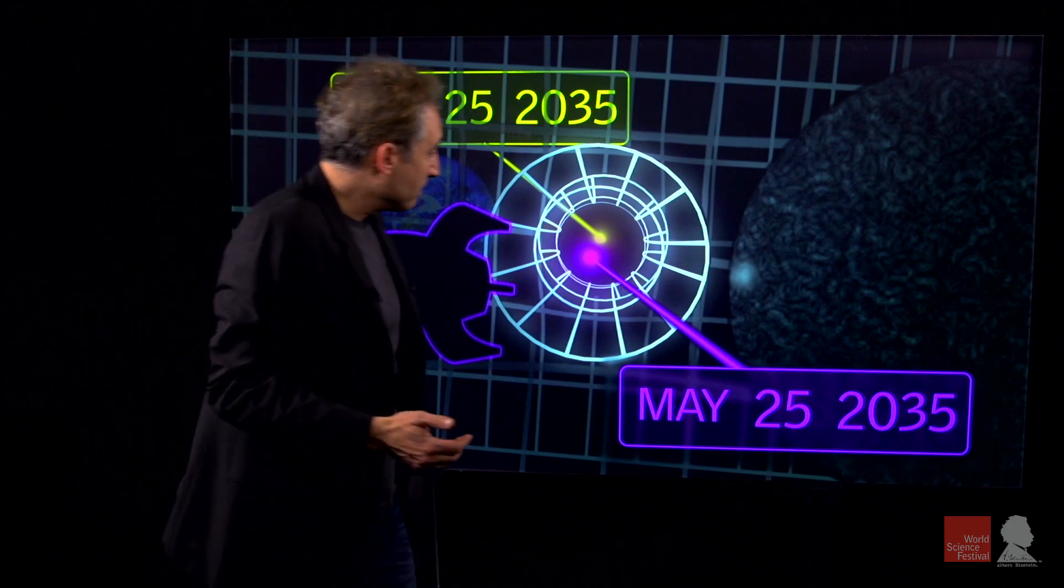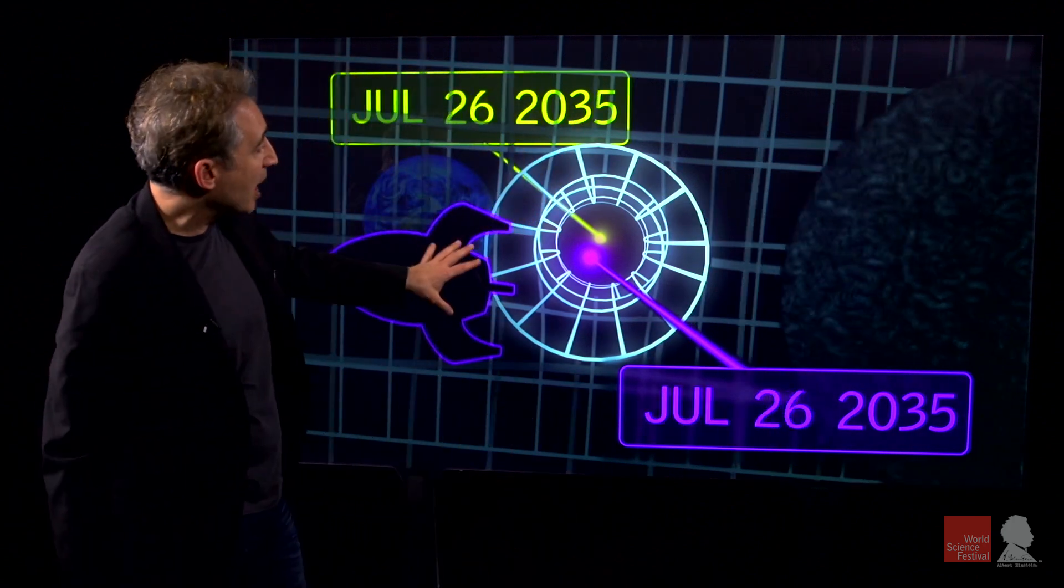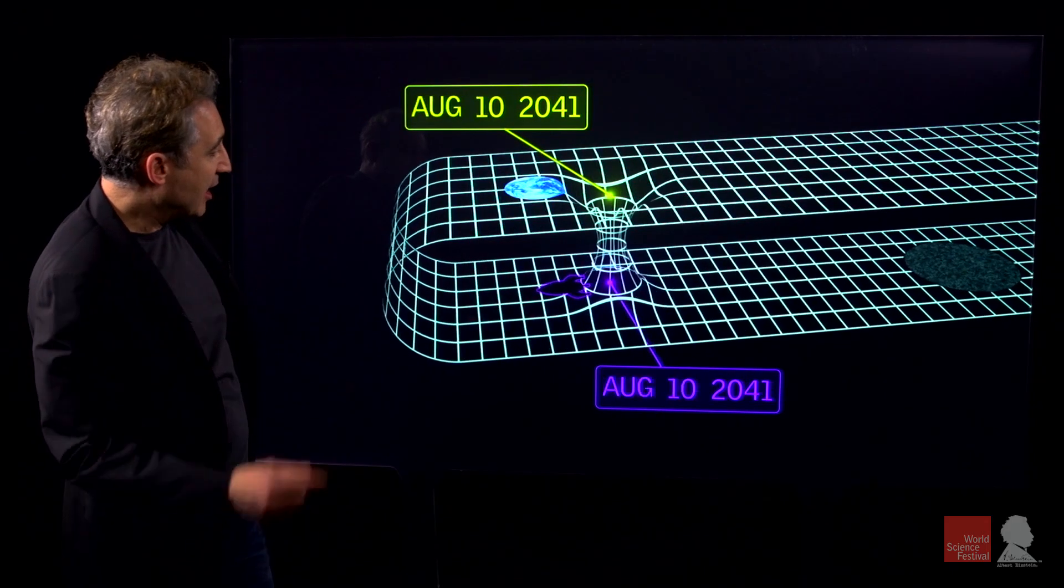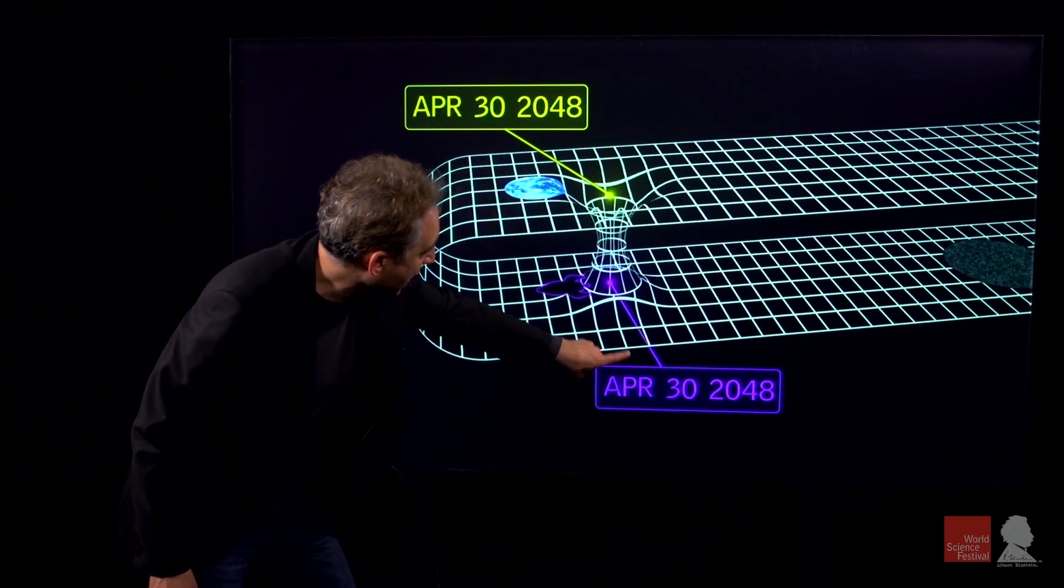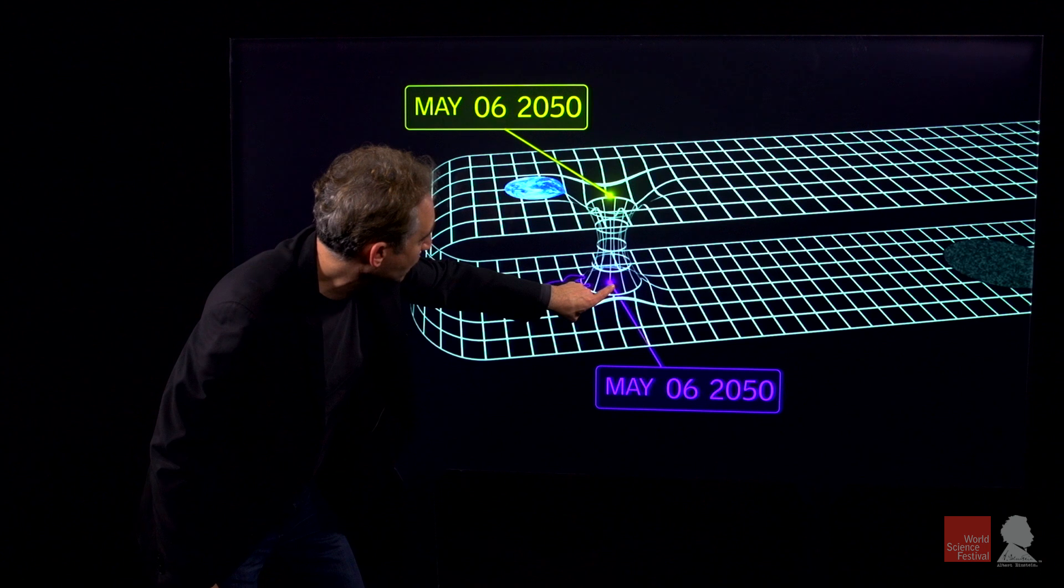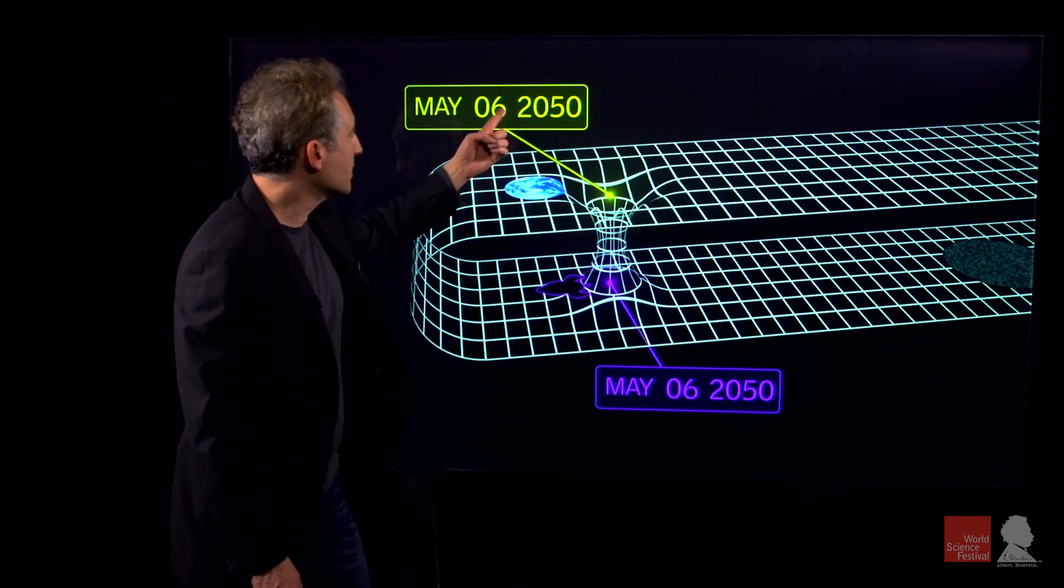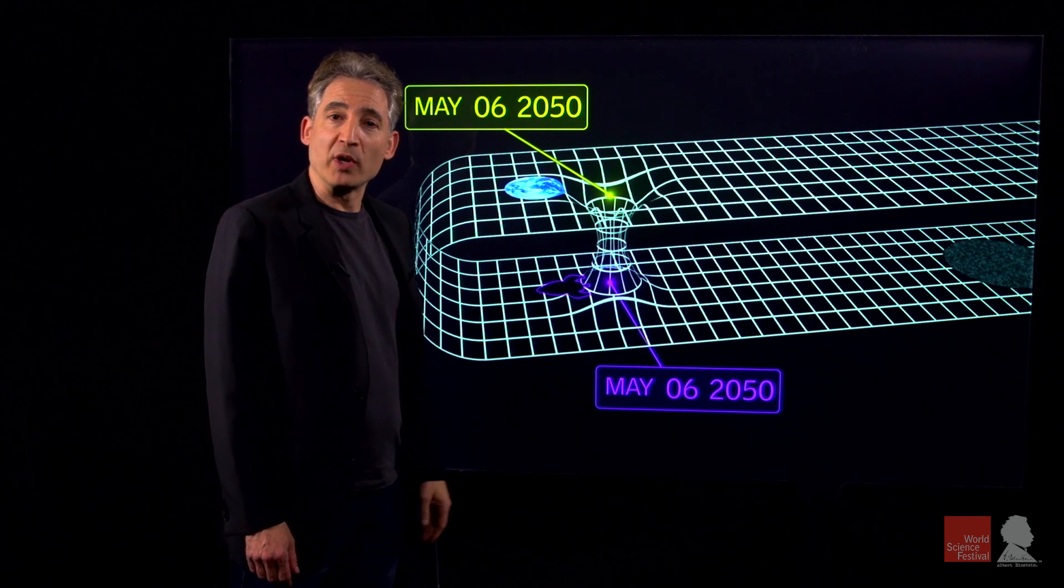And that's quite interesting because it means that when this rocket ship goes back to the vicinity of the Earth, if we now consider the two clocks, the one at this wormhole opening and the clock at that wormhole opening, those two clocks will agree with one another.